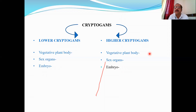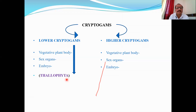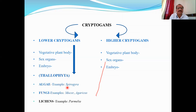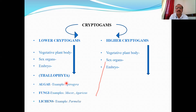Since the vegetative plant body in lower cryptogamae is the thallus, these plants are also called Thallophyta — 'thallo' meaning thallus and 'phyta' meaning plant. Thallophyta includes algae (e.g., Spirogyra), fungi (e.g., Mucor, Agaricus), and lichens, which are a symbiotic association of algae and fungi (e.g., Parmelia).